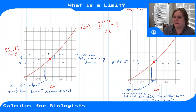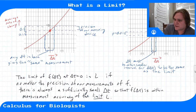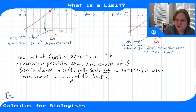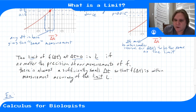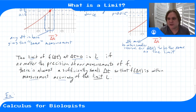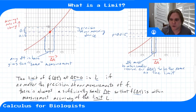More precisely: the limit of f of delta t as delta t goes to zero equals some number L, if no matter how precise our measurements of f are, we can always find a sufficiently small delta t so that f of delta t is within the measurement accuracy of L. If we can always do this no matter how precise our measurement, our function is approaching the limit L.